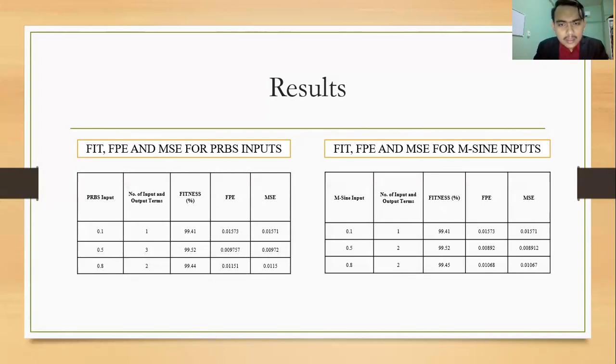For multi-sign input, the best number of input and output terms is number one. Then 0.5 and 0.8, both of them use number two for the number of input and output because it gives the best result in terms of fitness, FPE, and MSE.